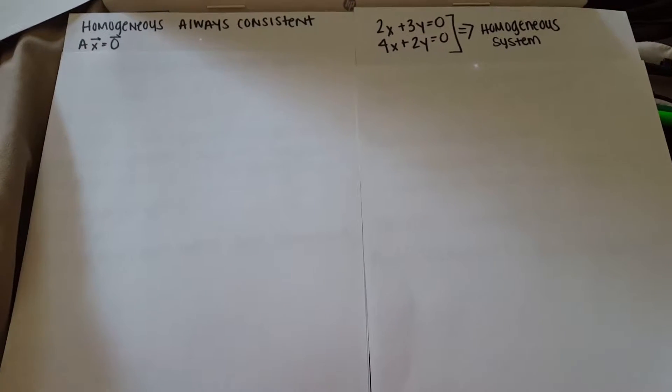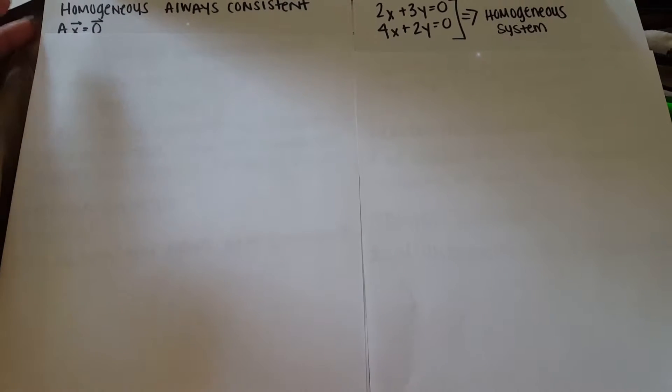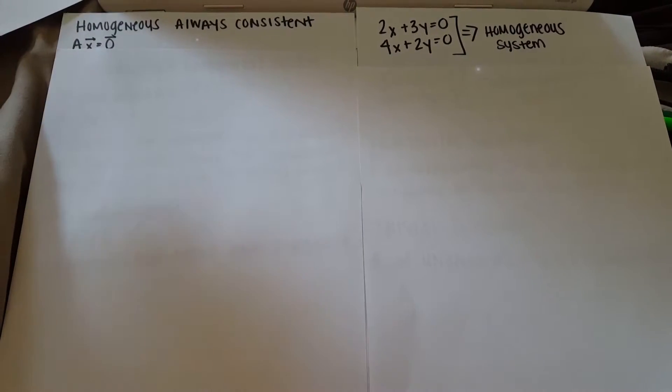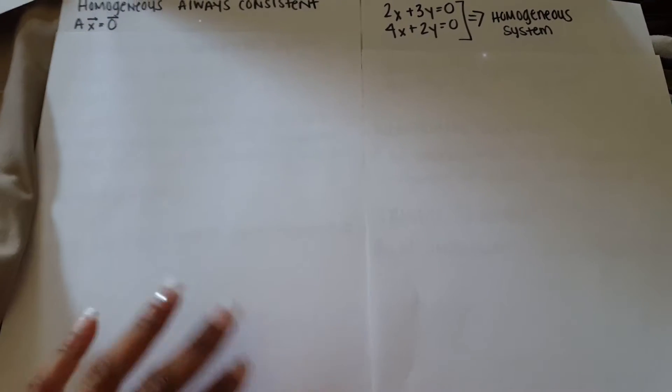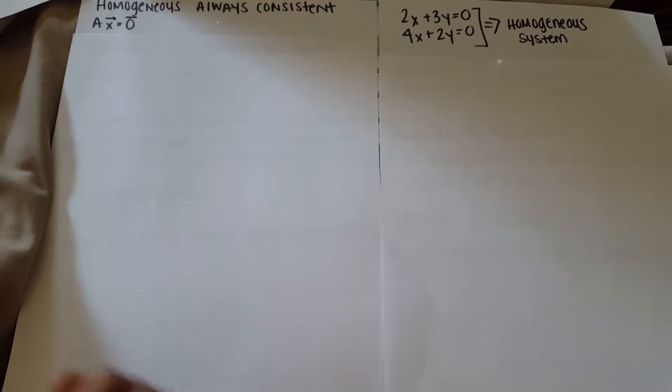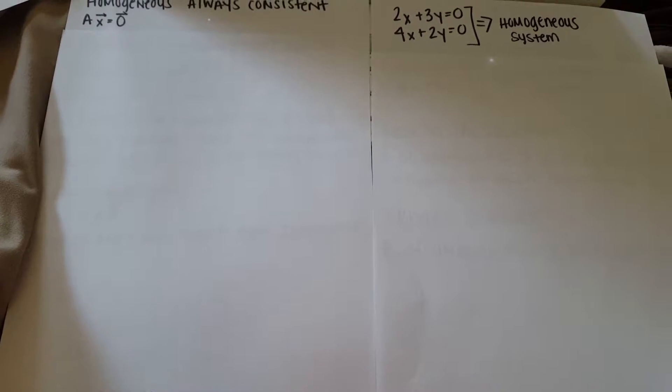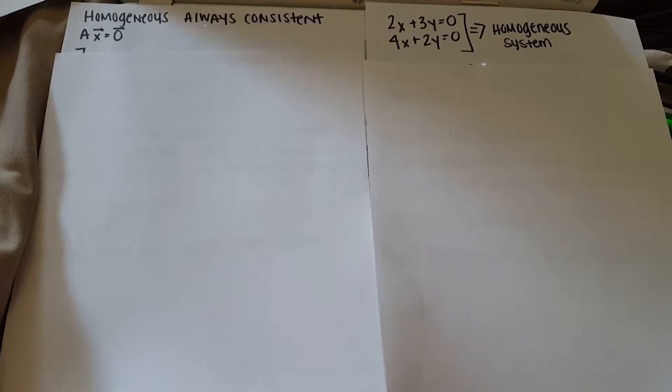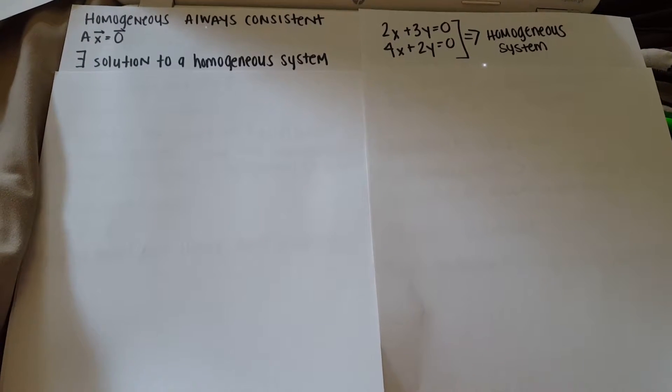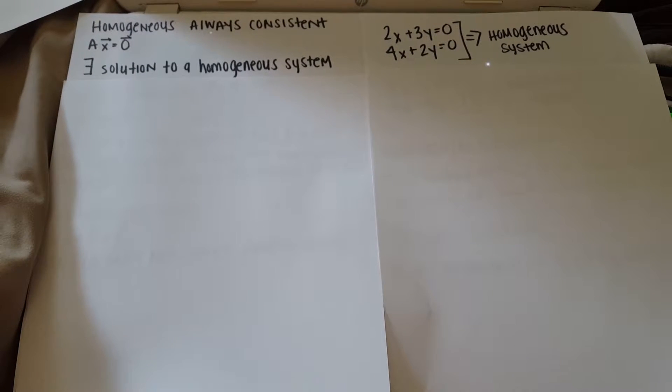The first thing we know is that a homogeneous system of equations is always consistent. That is because any matrix A times the vector X is equal to a zero vector, which means there exists a solution to a homogeneous system.